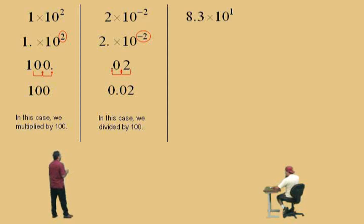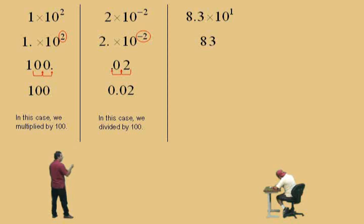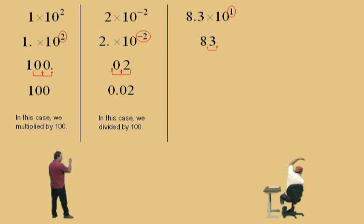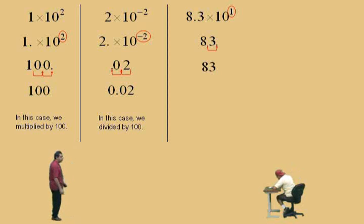Eight point three times ten to the first power — we're multiplying by ten. Eight point three: move the decimal one place to the right, and that gives us eighty-three. We multiply it by ten.